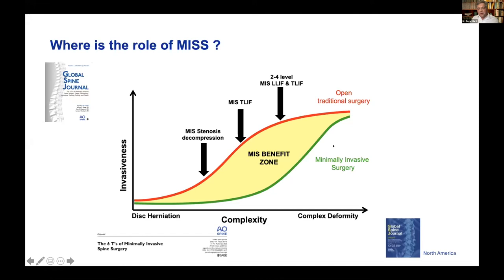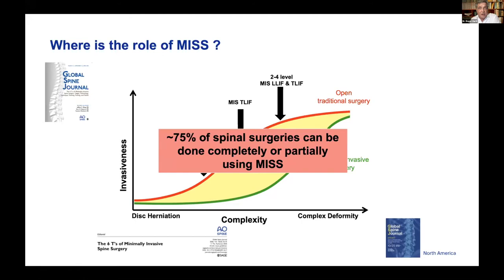About 75% of spinal surgery nowadays can be done partially or completely with MIS. For young surgeons wanting to become good MIS surgeons, the key components are: patient selection — which is the most important and often overlooked; tools and technology such as the microscope and navigation; surgical techniques; teaching and training; research; and finally talent.